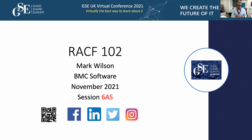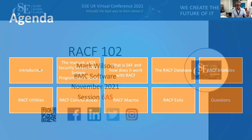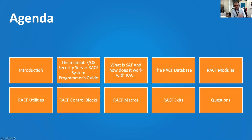The idea is that you'll have things to go and look at yourselves afterwards. The session code is 6 Alpha Sierra — 6AS — for your feedback. We'd love to get your feedback from a GSC perspective so we know what you like and don't like. The agenda covers the RACF Systems Programmer's Guide, SAF, database modules, utilities, control blocks, macros, exits, and then questions.